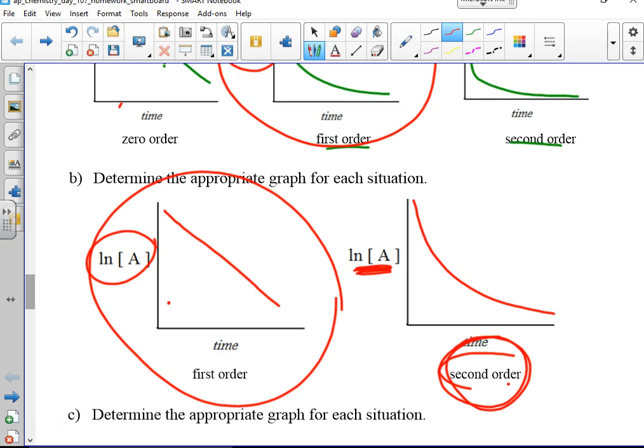Alright. Everybody see where I'm going with this? This is exactly why I'm doing this, because this is what students miss on the exam. Because they're like, oh, whoa, wait. If it's second order, that's a positive slope. Make sure you know your units.